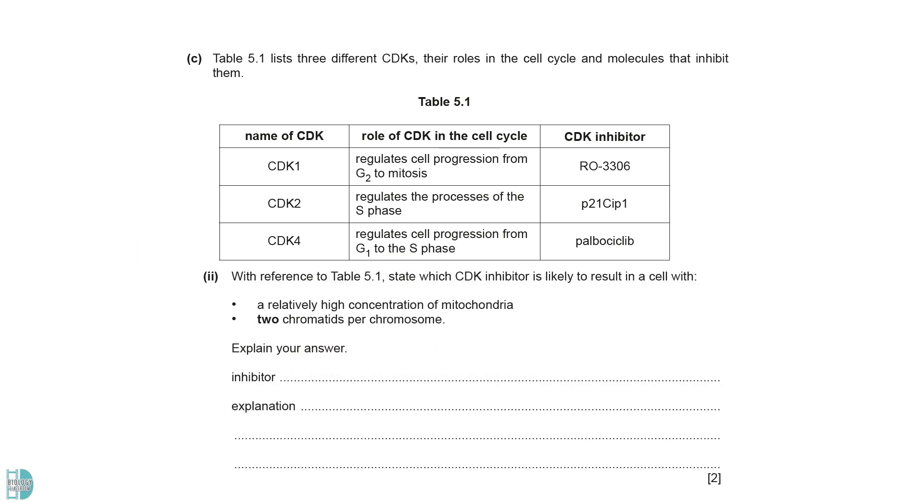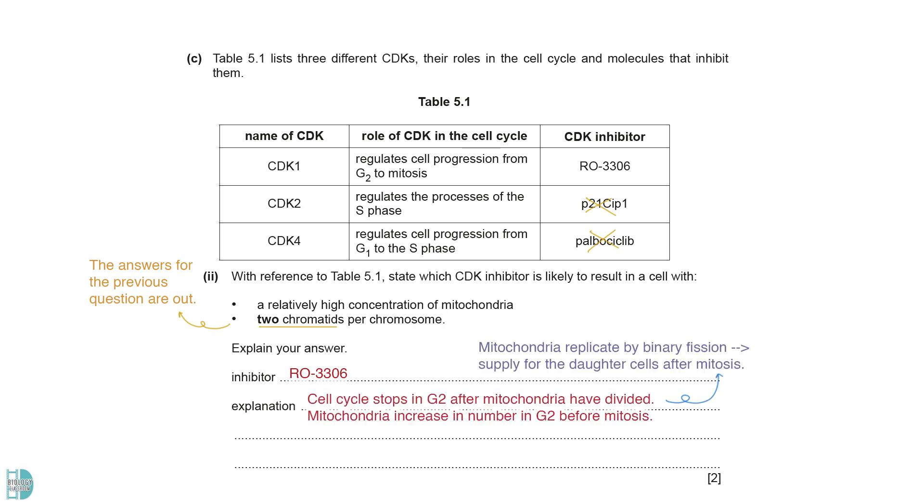State which CDK inhibitor is likely to result in a cell with a relatively high concentration of mitochondria and two chromatids per chromosome. Since there are two chromatids per chromosome, we can rule out the two inhibitors in the previous question. The only option is RO3306. Mitochondria replicate by binary fission and divide during the G2 phase of interphase, ensuring an adequate supply for the daughter cells after mitosis. The inhibitor prevents a cell that has undergone replication from entering mitosis, resulting in a greater number of mitochondria because they are not being divided between the daughter cells.